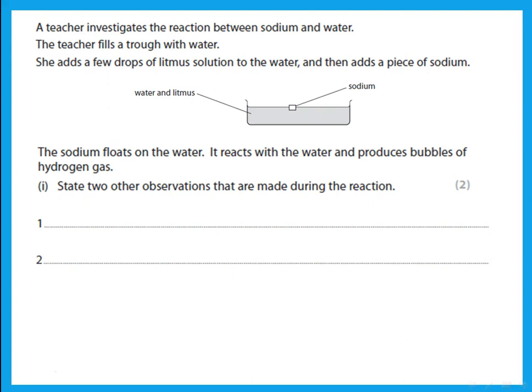A typical question: a teacher fills a trough with water, adds a few drops of litmus solution, then adds sodium. The question already states sodium floats and bubbles of hydrogen gas are formed. Two other observations are: sodium darts and melts on the surface, and the litmus solution turns blue due to the alkaline sodium hydroxide solution formed.